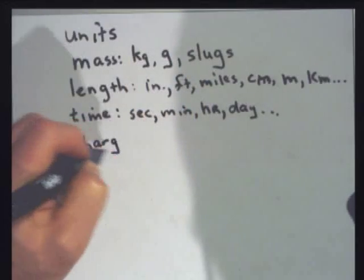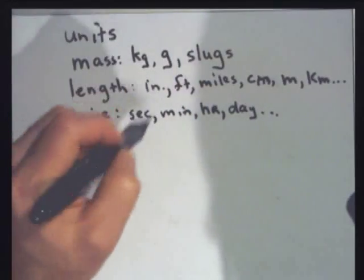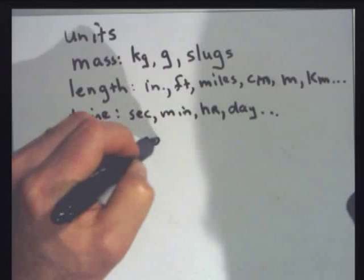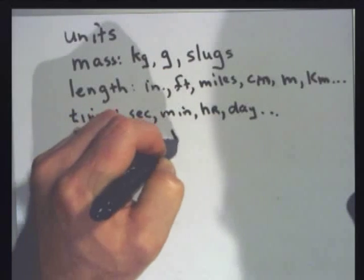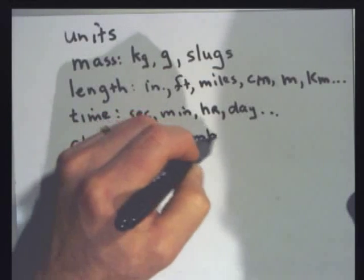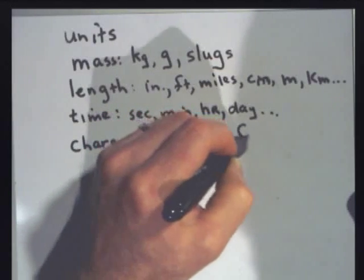The other fundamental unit that I'm not going to talk about much this quarter — maybe later — is charge. Positive and negative charges. And charge is given in units of coulombs, after some French guy named Coulomb. The coulomb is given with a capital C.